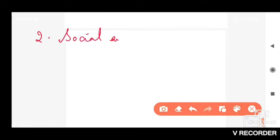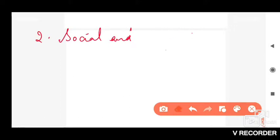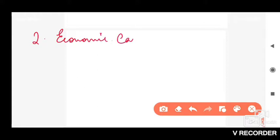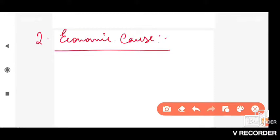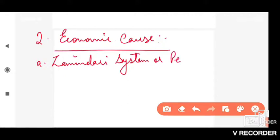After this, the second cause we are going to look at is the economic cause. The first thing Britishers started under economic cause was the Zamindari System — also known as the Permanent Settlement of Bengal. This was introduced in 1793 by Lord Cornwallis, and it was recommended by John Shore.